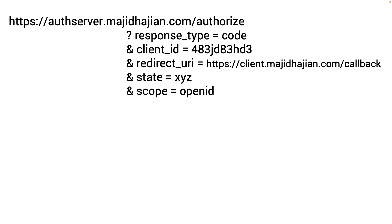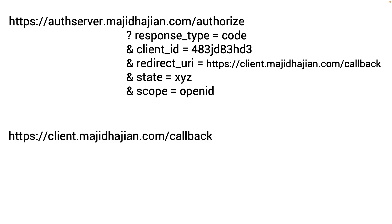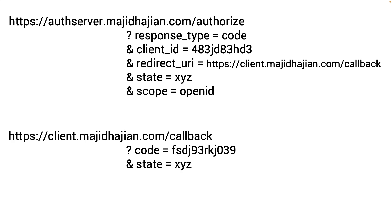You can also define the scope. In this case, openid means we just want to authenticate the user. After authorization and authentication is done, the user comes back to the redirect URI callback. What you receive is the code and the state that you passed. State is useful if you want to keep track of different states.